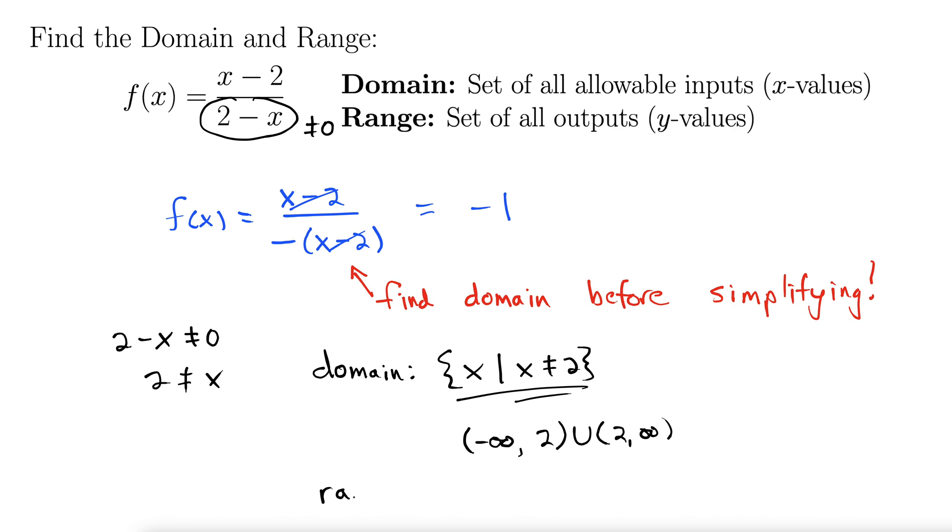The range is the set of y values. No matter what you plug in for x, you only get one y value out. It's negative 1, no matter what goes in for x. So the range is going to be a single point: negative 1.